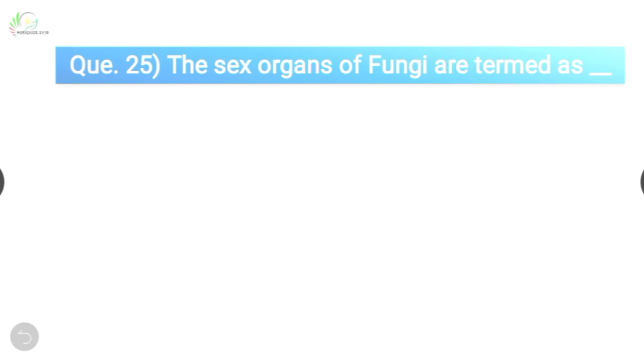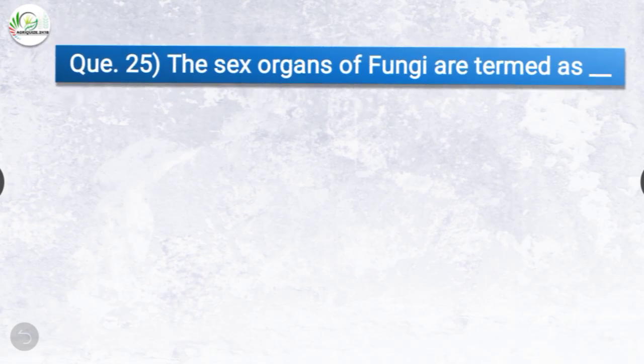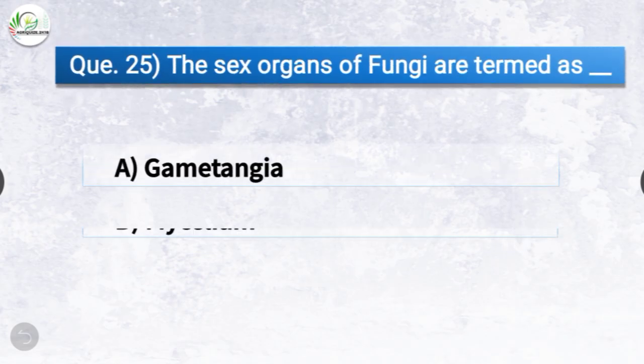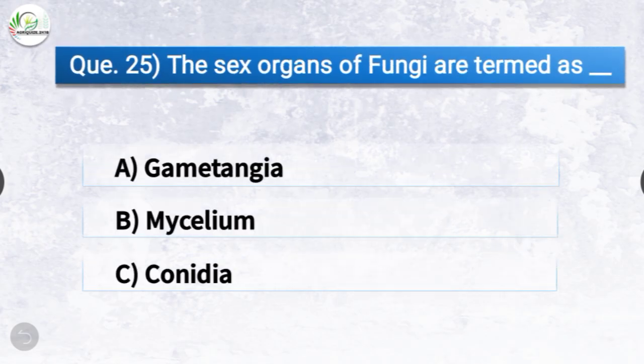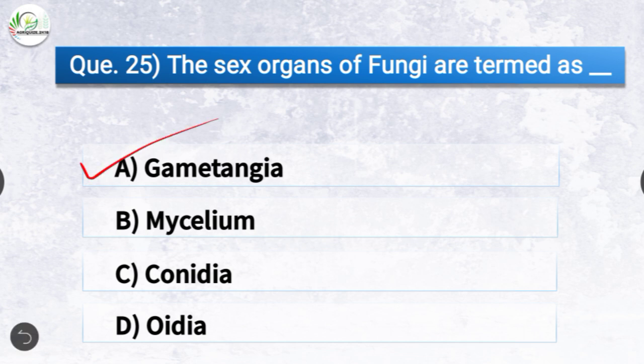Question number twenty-five: The sex organs of fungi are termed as dash. The options are gametangia, mycelium, conidia, or oidia. The correct answer is option A, gametangia. The sex organs of fungi are termed as gametangia.